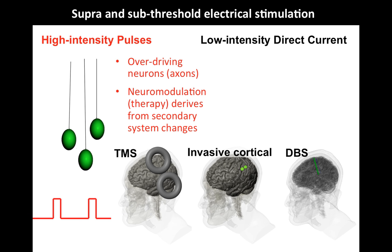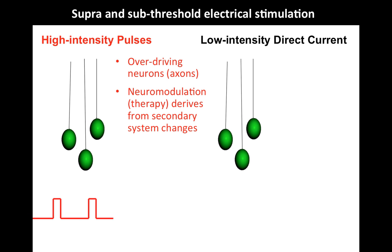Most electroceuticals, most brain stimulation techniques are super-threshold. Transcranial magnetic stimulation is super-threshold — it can make our finger twitch. Invasive techniques, DBS and cortical stimulation, are super-threshold as well. In contrast, low-intensity direct current stimulation is sub-threshold. What that means is that if these cells are not firing and we apply a low-intensity direct current, they still don't fire. The low-intensity stimulation is not enough to make them fire.